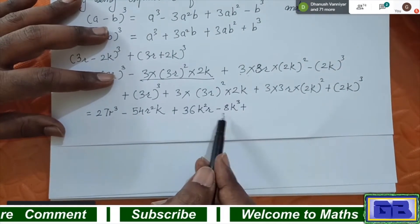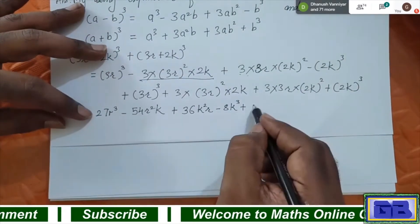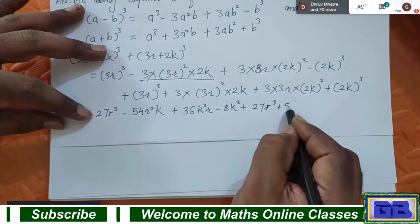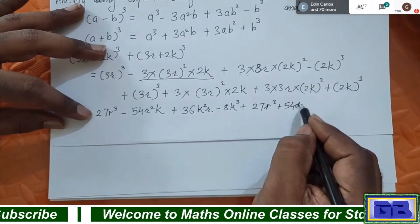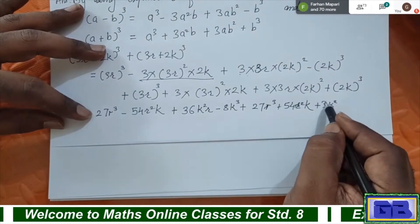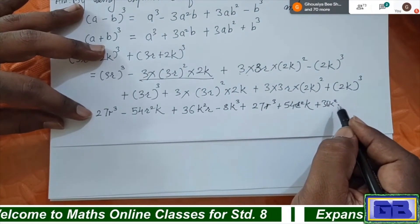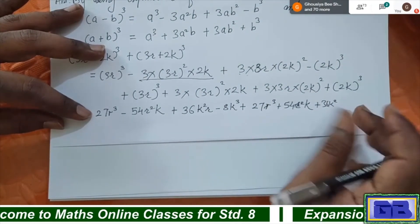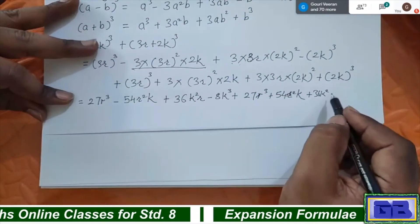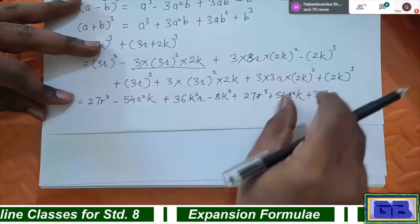Now identify and cancel opposite terms: minus 54r²k and plus 54r²k cancel. Minus 8k³ and plus 8k³ cancel. The remaining terms are all positive. You can use two lines for the working if the expansion is too large — just leave the same margin space so it's clear this is one step.